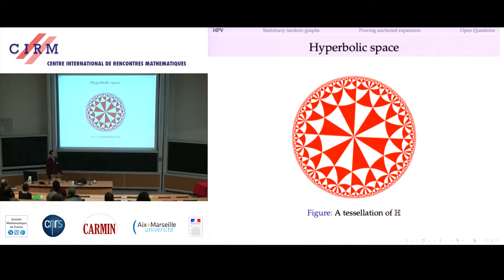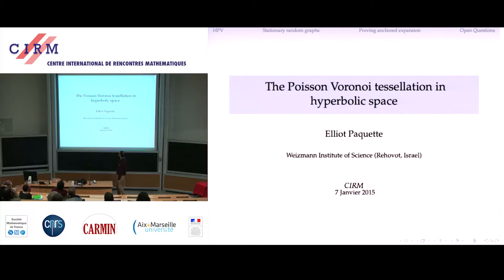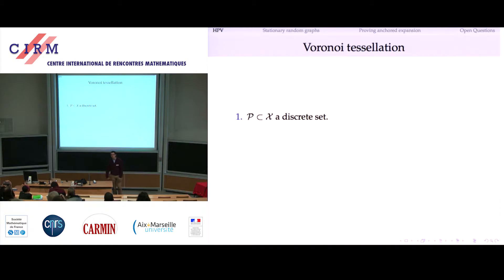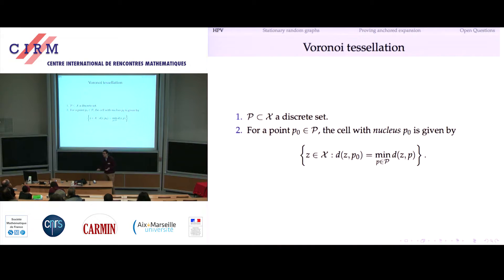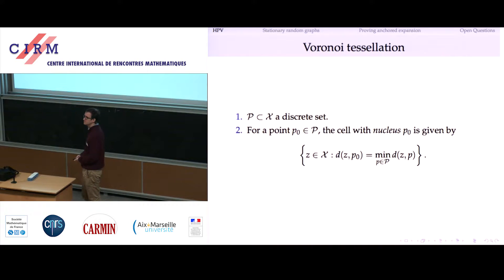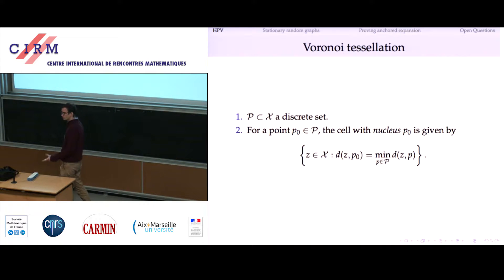This is also an example of a Voronoi tessellation. A Voronoi tessellation or tiling is a very general construction — you can do it in basically any metric space. You take a collection of points, which should be discrete, and then you form the Voronoi cells with nuclei at those points. The Voronoi cell is the collection of points in the space closer to a given nucleus than any other point. This partitions the space into cells.